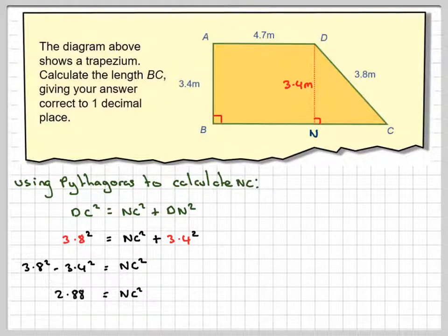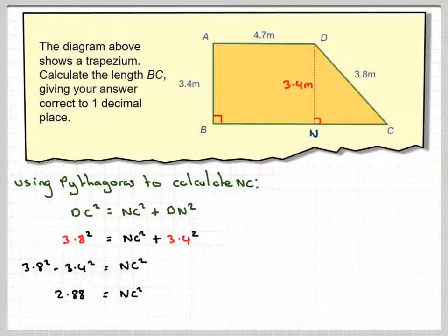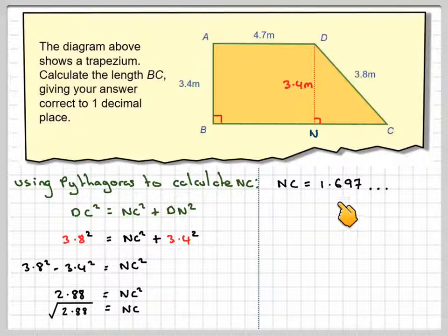NC squared will be equal to — if you work 3.8 squared minus 3.4 squared on your calculator — you're going to get 2.88. To find NC, you need to take the square root of 2.88, which is approximately equal to 1.697.